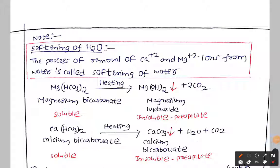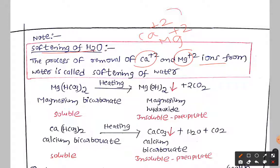One thing to remember: soft water means the process of removal of calcium and magnesium ions. As we discussed, we have cations and anions in hard and soft water. Here we have the cations — calcium ion and magnesium ion. If you remove only these cations, that water is called soft water, or the process is called softening of water.